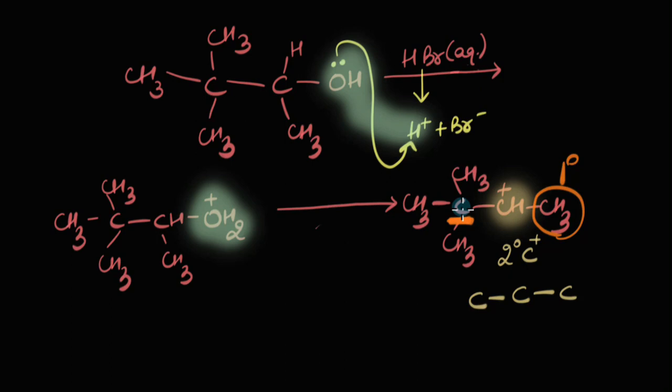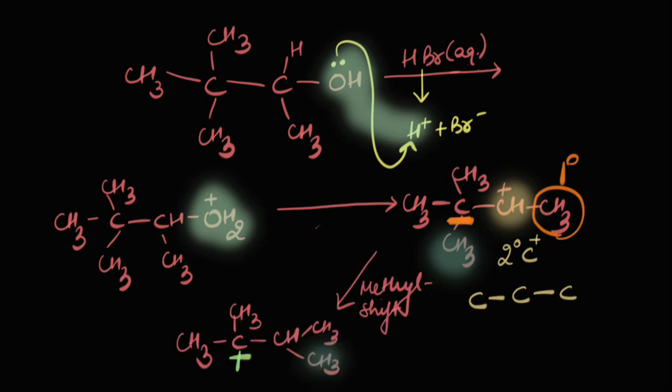Or methyl shift to be precise. We have this methyl group that can take up its bond electrons and go to the adjacent carbon. What would it lead to? It would lead to the formation of a carbocation that is 3 degree. Much more stable. Right?